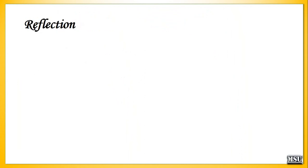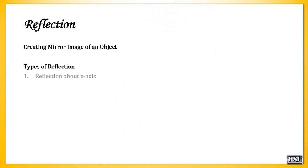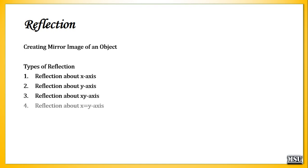Reflection is creating a mirror image of an object. There are different kinds of reflections. Some examples are: reflection about the x-axis, reflection about the y-axis, reflection about the xy-axis, and reflection about the x equals y axis.